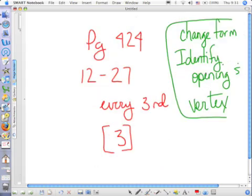Okay, tonight on page 424, you're going to do 12 through 27 every third, which is not many. And don't do the directions that are in the book. I want you to do what we did in class. I want you to change the form, identify the direction it's opening, and identify the vertex. And that would be assignment number 3.